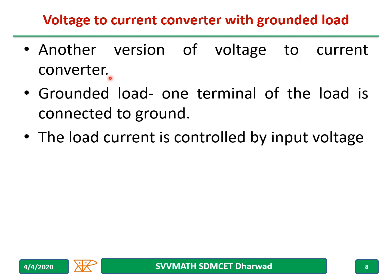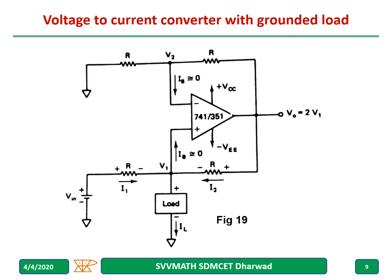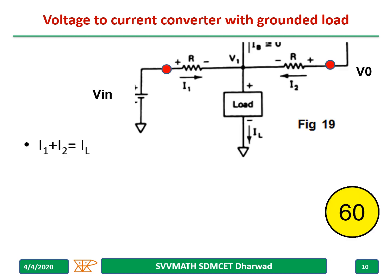The grounded load — the name itself gives the idea: one terminal of the load is grounded. This is the circuit diagram. The grounded load means one terminal is grounded here, and the remaining resistor R is connected with Vin applied to the non-inverting terminal. Taking this portion for our analysis: I1 plus I2 equals...